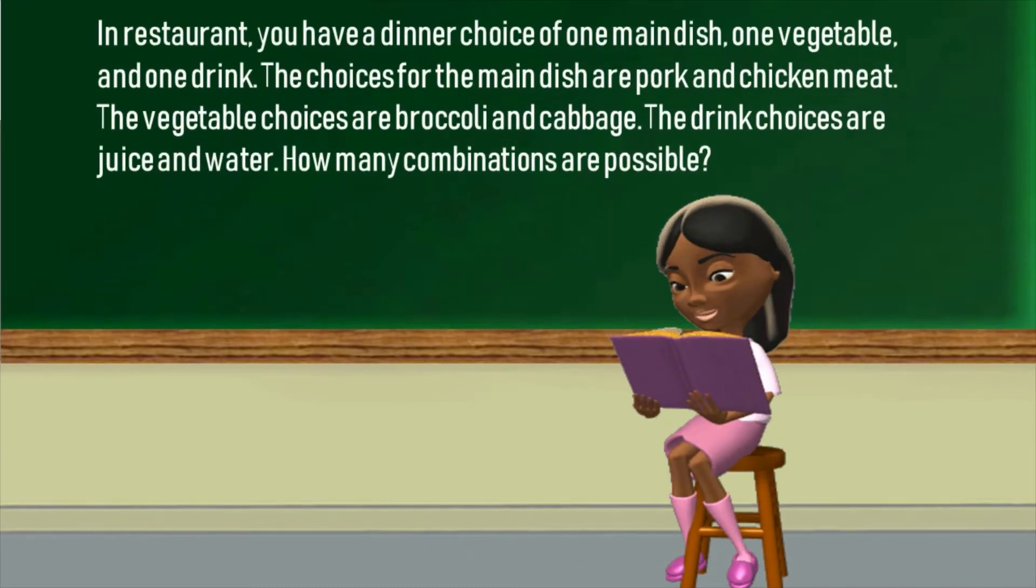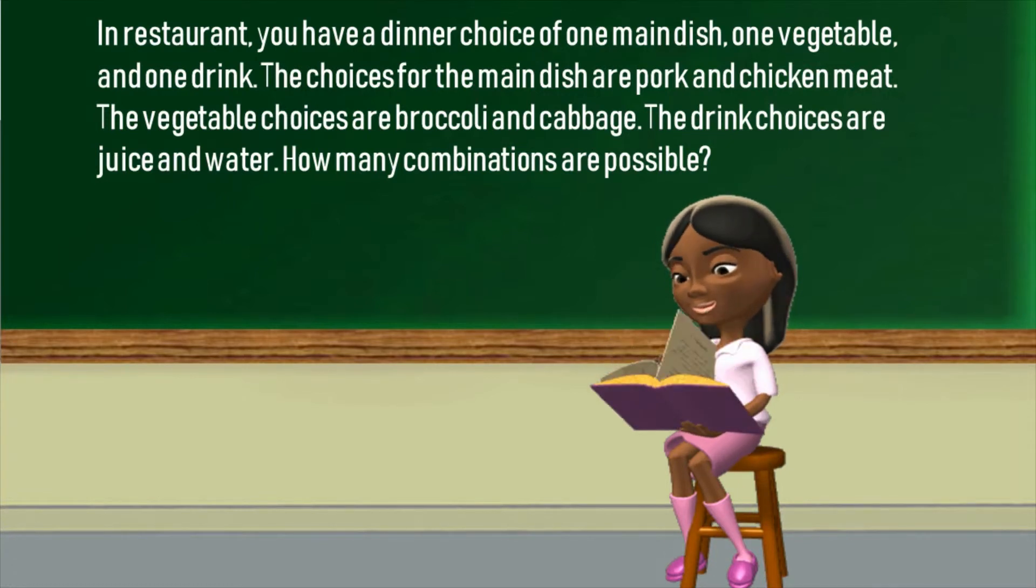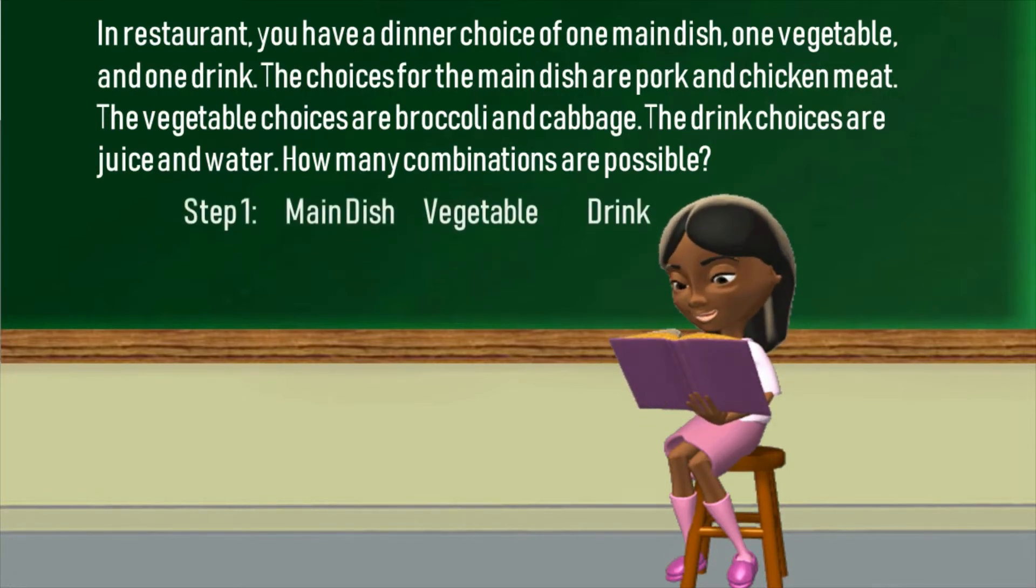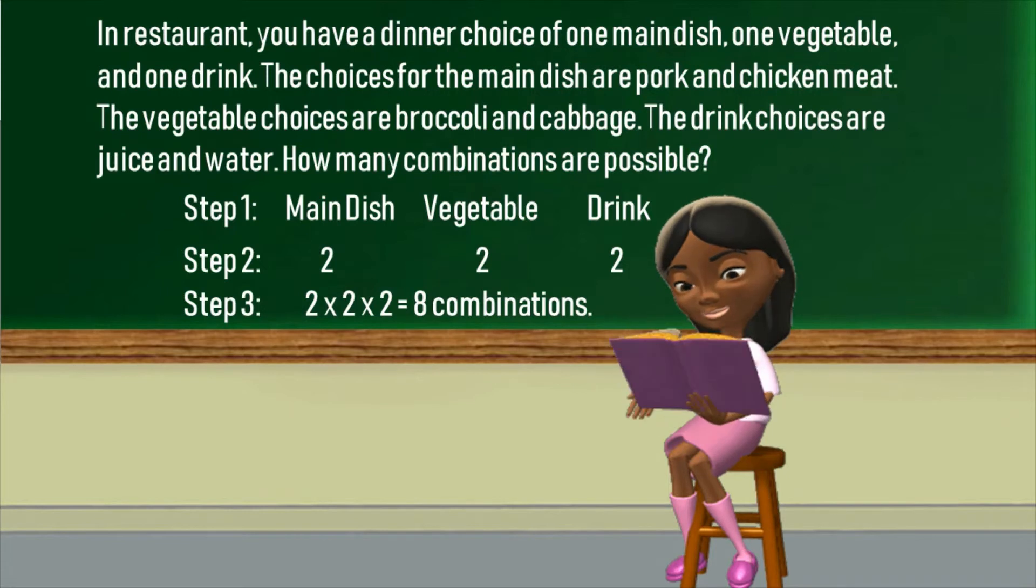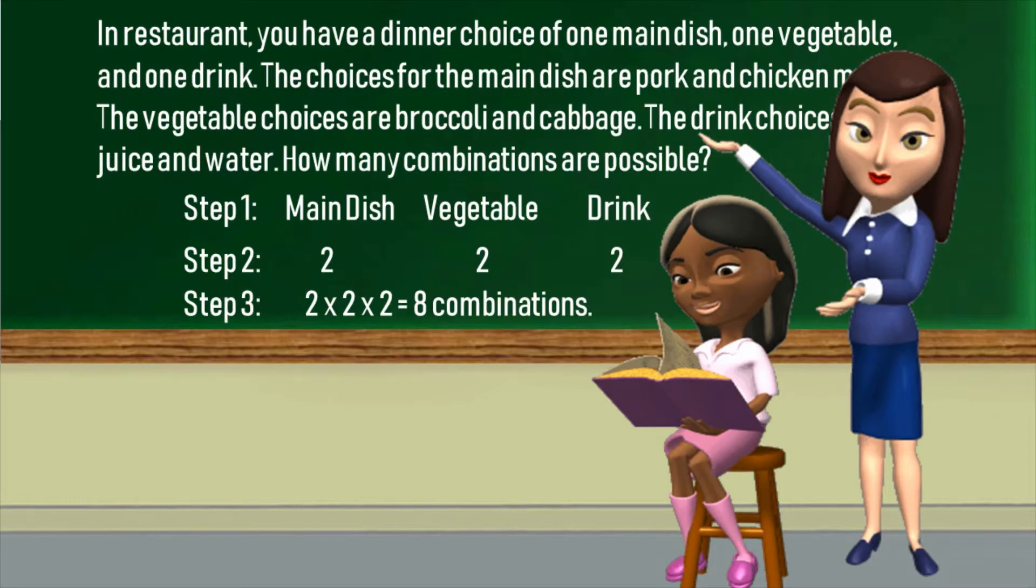Problem: In a restaurant, you have a dinner choice of one main dish, one vegetable, and a drink. The choices for the main dish are pork and chicken meat. The vegetable choices are broccoli and cabbage. The drink choices are juice and water. How many combinations are possible? In step one, there are three events, namely the main dishes, the vegetables and the drinks. In step two, there are two options for each of them. In step three, multiplying them all will give eight possible combinations, teacher. Amazing. Next.